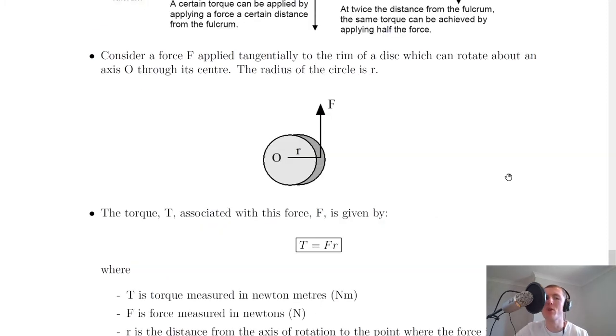To think about this in more context, let's consider a force F applied tangentially to the rim of a disc. Here's our disc, which can rotate about an axis O through its centre. The radius of the circle is R. We've got our disc of radius R and we're applying a force at this distance R away from the centre, where it's going to move around.